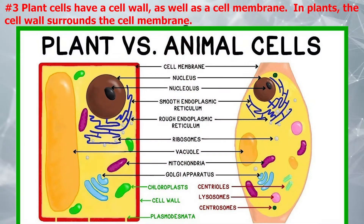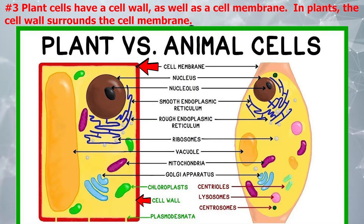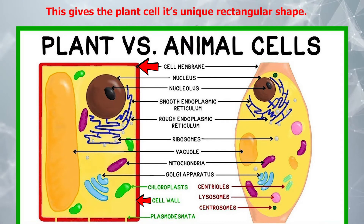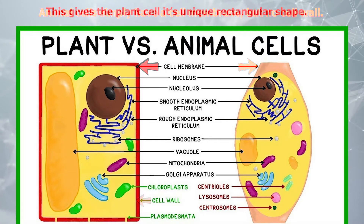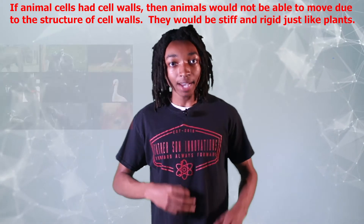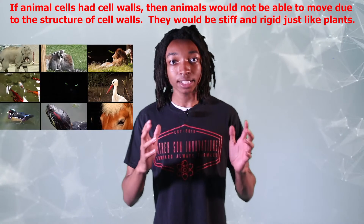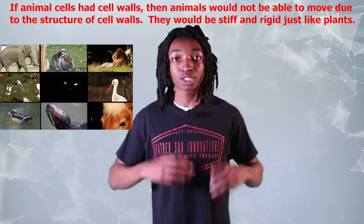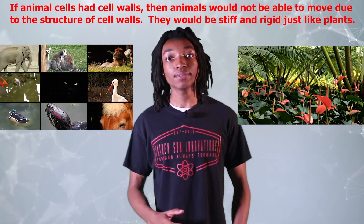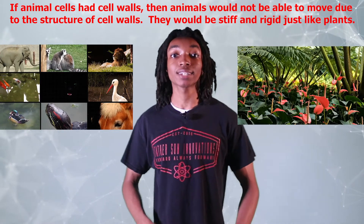Number three: plant cells have a cell wall as well as a cell membrane. In plants, the cell wall surrounds the cell membrane, which gives the plant cell its unique rectangular shape. Animal cells simply have a cell membrane but no cell wall. Think about it — if animal cells had cell walls, then animals would not be able to move due to the structure of cell walls. They would be stiff and rigid just like plants.